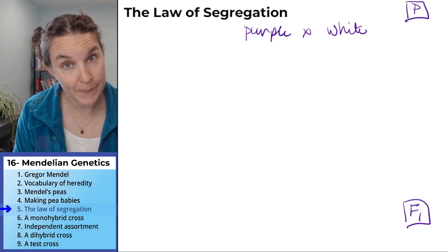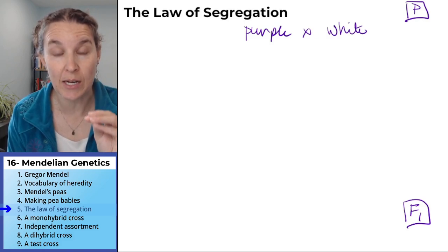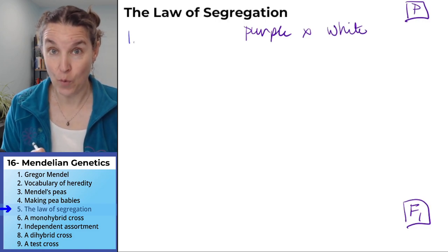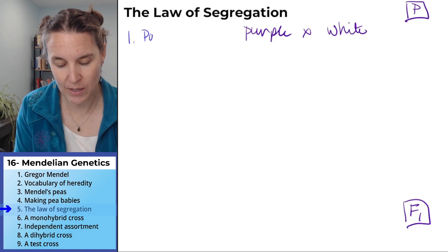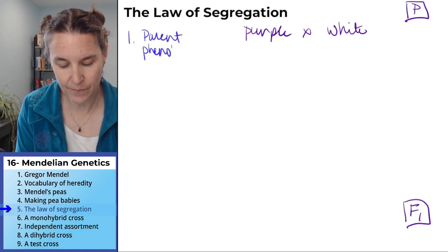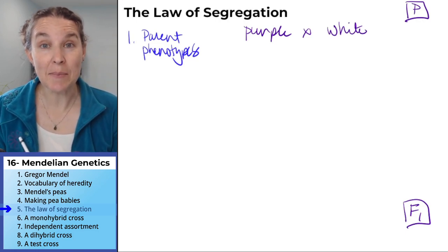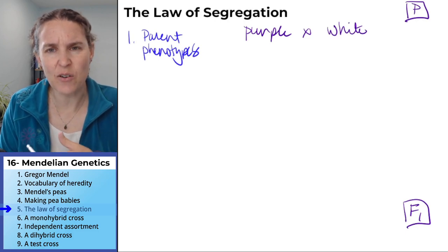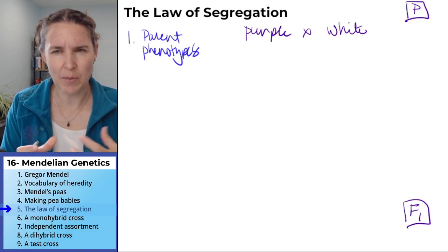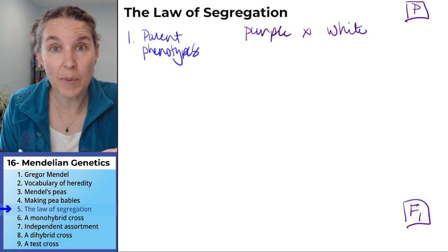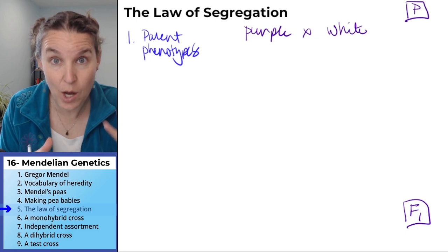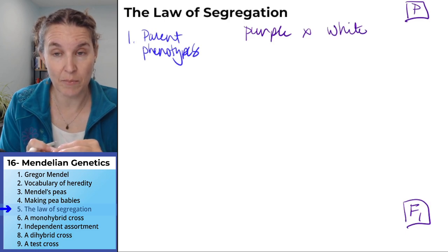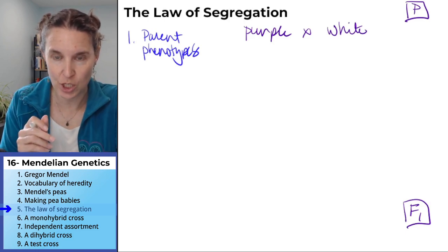There are four steps to solving heredity problems and you do them every single time. Step one is to determine parent phenotypes — sometimes this is given to you, other times you have to figure it out from the information in the problem. In our case, the parent phenotypes are given: we have purple-flowered parents and white-flowered parents.